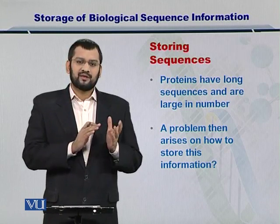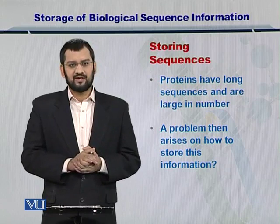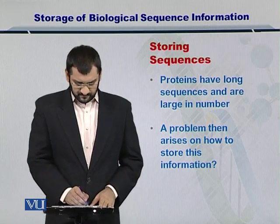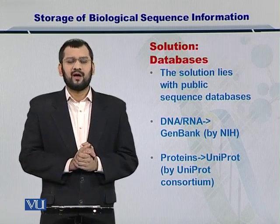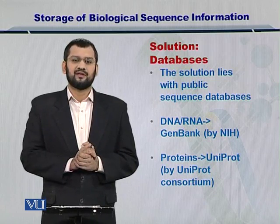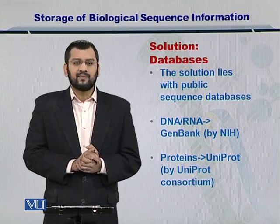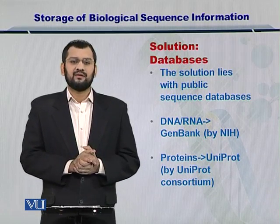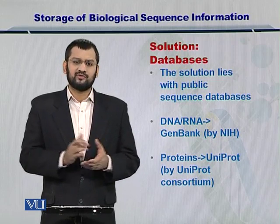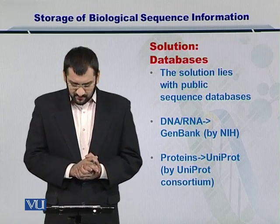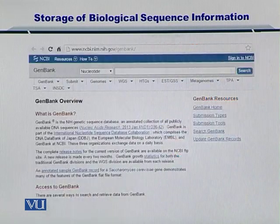So you can represent the protein sequence, the DNA sequence, and the RNA sequence as simple strings. How do we store this information? The solution to this problem lies in the publicly available databases that are already there. For instance, in case of DNA and RNA, you have GenBank by NIH, and in case of proteins, you have UniProt and SwissProt and others by the EMBL UniProt Consortium.